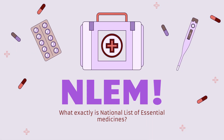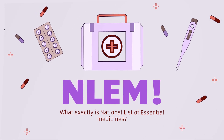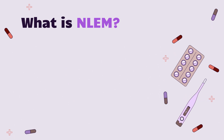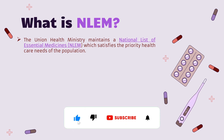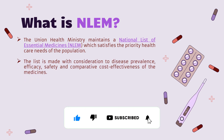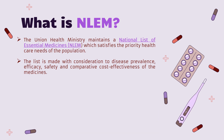What exactly are National Lists of Essential Medicines? The Union Ministry of Health maintains a National List of Essential Medicines, called NLEM, which satisfies the priority healthcare needs of a population. Essential medicines are a list prepared considering disease prevalence, efficacy, safety, and comparative cost-effectiveness of the medicine.